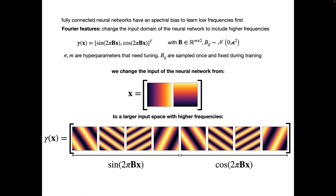This introduces two hyperparameters: m, the number of Fourier features, and σ², the variance of the frequency distribution. The B matrix also adds correlation between the x and y coordinates. To include higher frequencies, simply increase σ². The resulting inputs include sines and cosines at various frequencies and orientations, as shown in the example images.